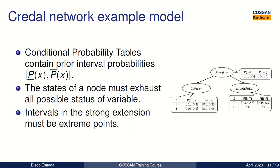So how do we build our Credal Network model? As with Bayesian Networks, we need to build our conditional probability tables, which in this case are formed by interval probabilities — prior interval probabilities. The states must exhaust all the possible states of the variable. And if you are using the strong extension, the priors must be extreme points, as we can see in this example.